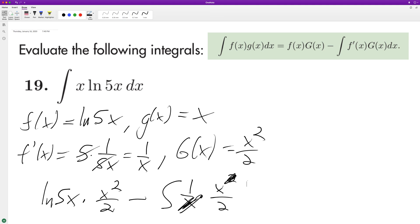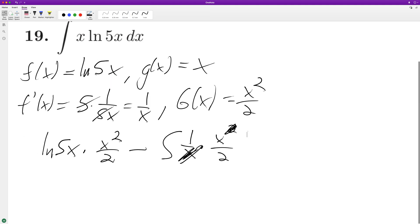So when we integrate that, we're going to have ultimately 1/2 x squared natural log of 5x minus 1/4 x squared.